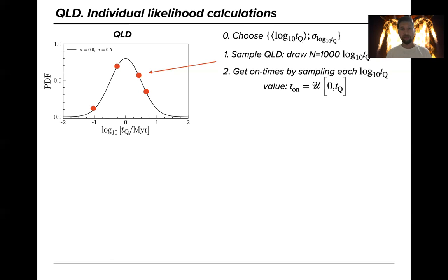Now remember that the proximity zone measurements and simulations give you the values of the quasar on-times not the lifetimes. So we need to also sample the on-times remembering that the quasar on-time is uniformly distributed from zero to TQ linearly. So we get 10,000 T_on times per these two parameters.